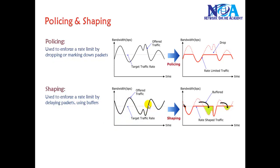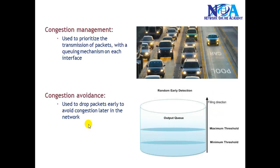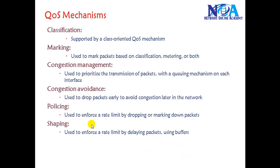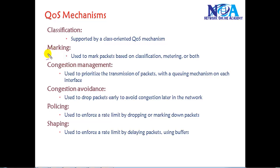We'll talk about traffic shaping in more detail in separate sections. In this section we are just providing an introduction to the different QoS mechanisms available, which ensure that high priority traffic always gets forwarded. If the network gets congested, we need to ensure that low priority and high priority traffic are differentiated and that preference is given to the appropriate traffic.